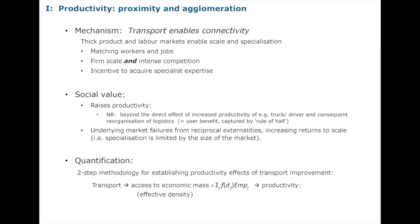So that's the mechanism — we believe it applies in some contexts and not others; it has to be tested context by context. We have a methodology comprising two parts. Stage one: from a particular project, how that affects effective density — or what I call access to economic mass, which I think is more accurate. Stage two: how effective density interacts with productivity. I measure access to economic mass by some inverse-distance-weighted function of economic activity — in the equation, economic activity is employment and f is a decreasing function of distance.